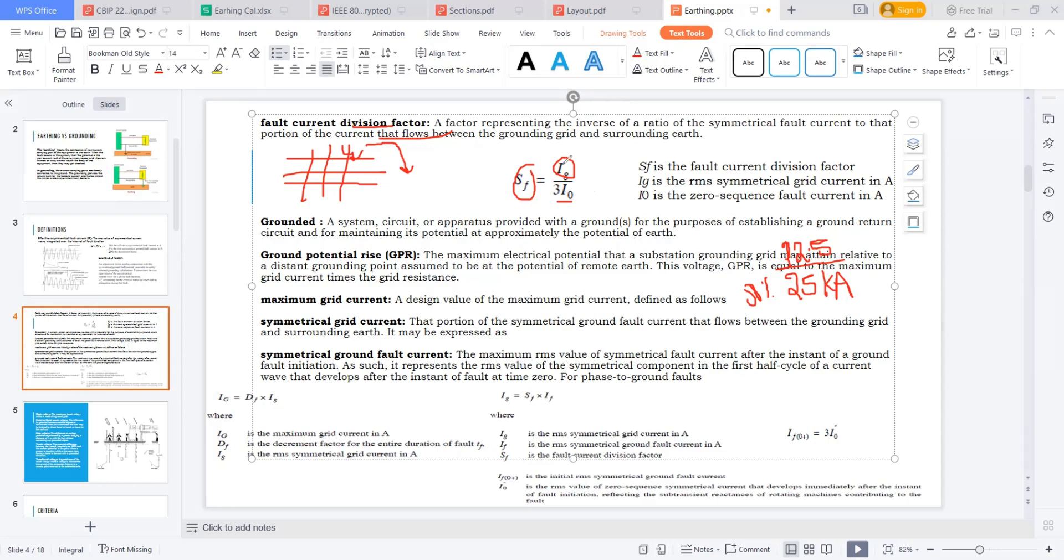We have to calculate IG now. What I'm telling is, if I'm constructing a mat below the ground, I can say only 50 percent is absorbed by the grid. The remaining is flowing through the ground.